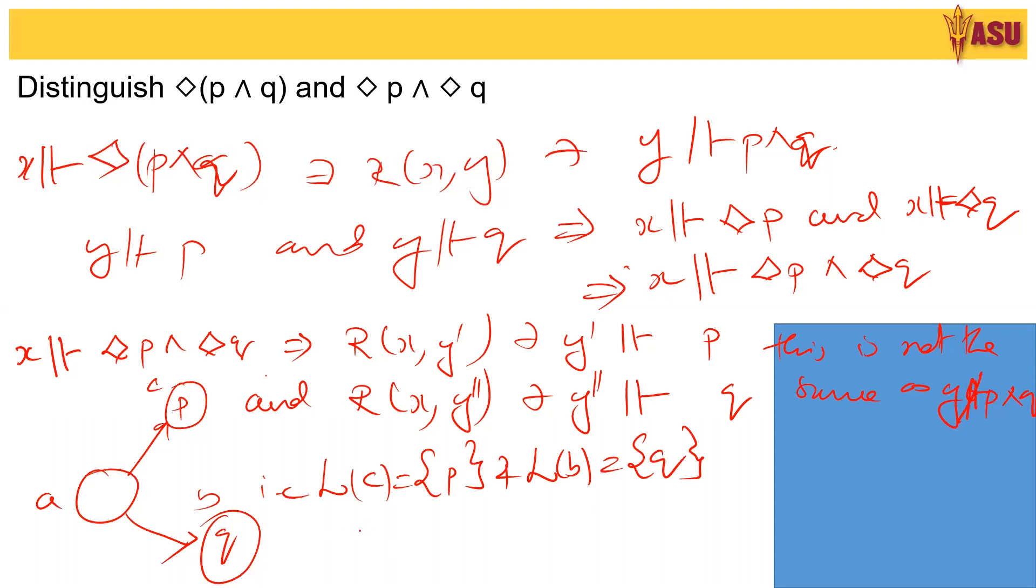Now clearly A does not have diamond (P and Q). This is the way we can distinguish between any two given formulas. They are not equivalent.